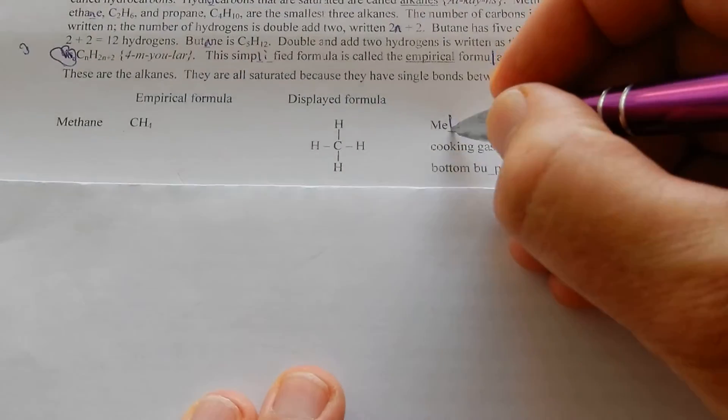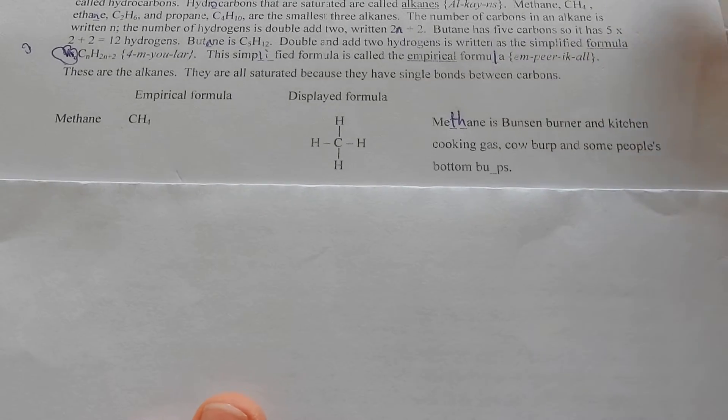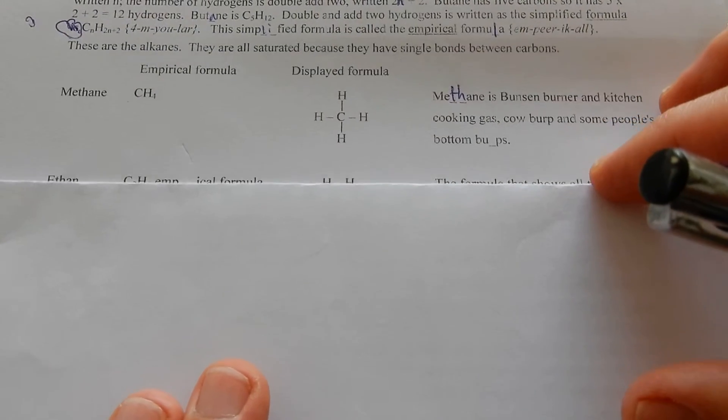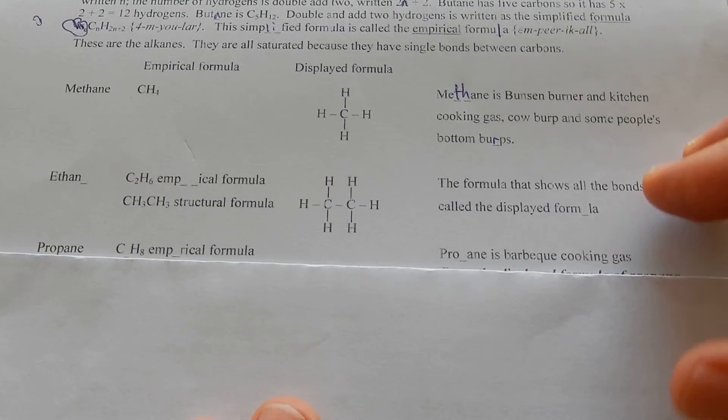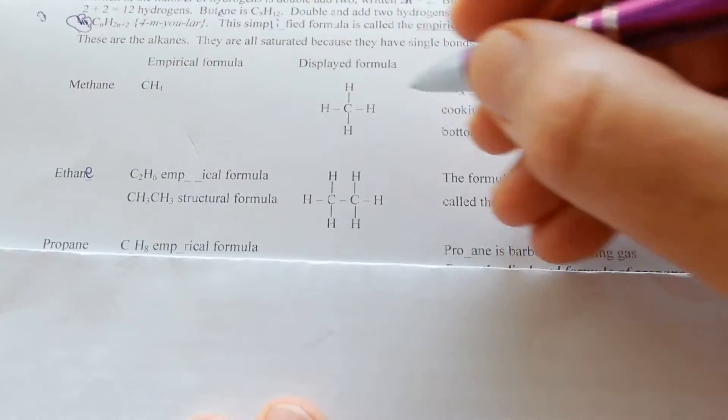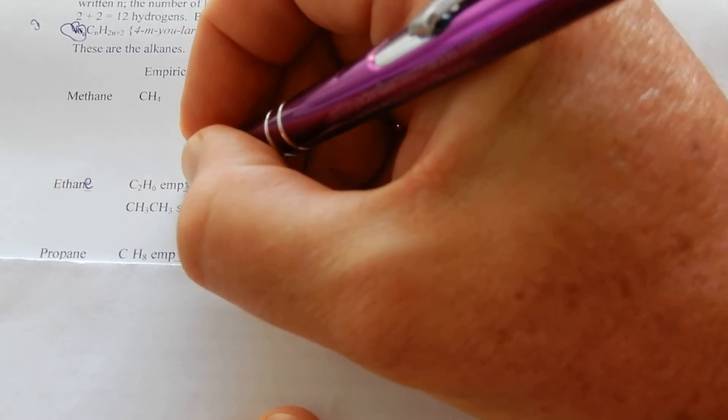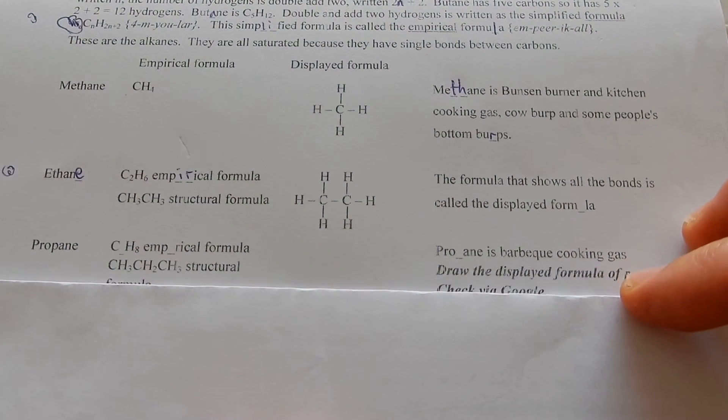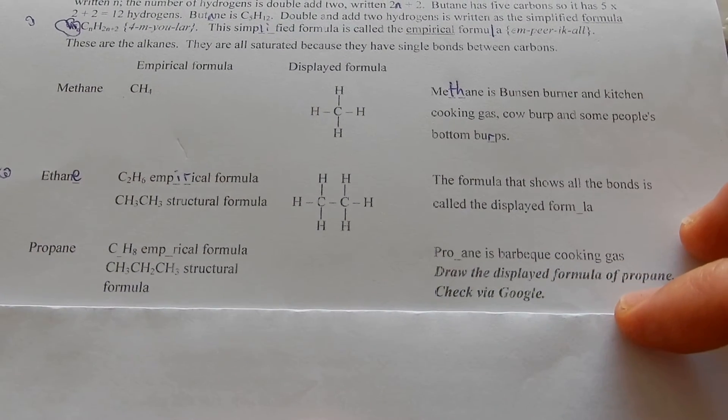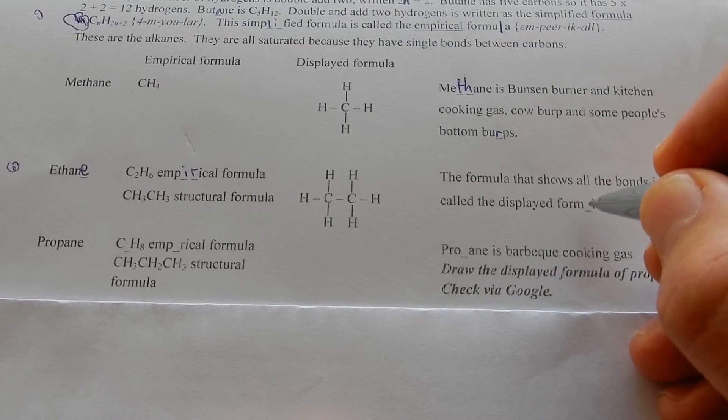Methane is Bunsen burner and kitchen cooking gas, cow burp and some people's bottom burps. Ethane, C2H6 empirical formula. Structural formula like that. The formula shows all the bonds. It's called the displayed formula.